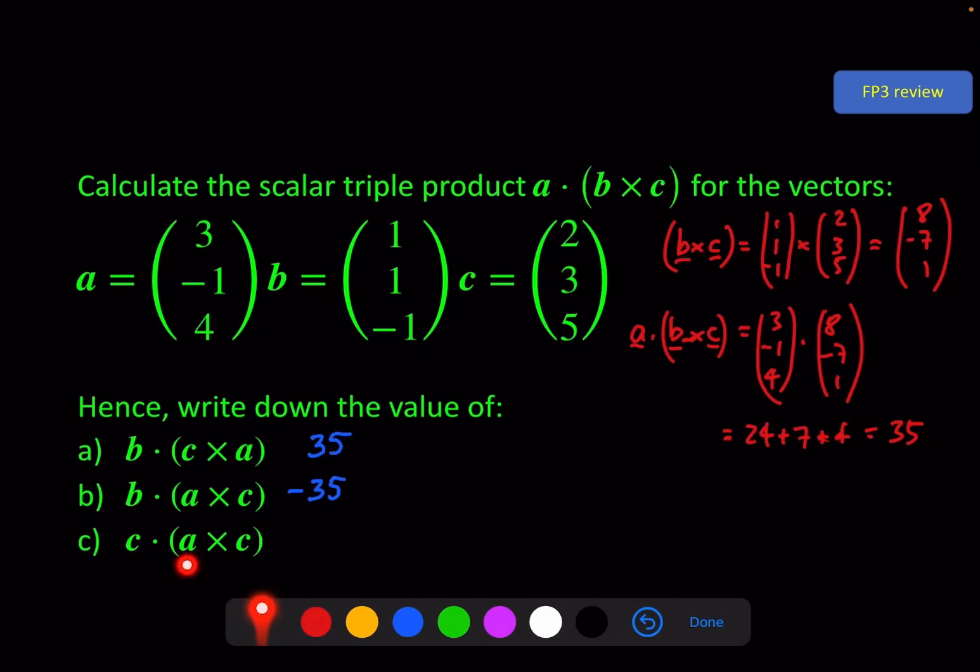The last one, c · (a × c). Well there's two vectors here that are the same, therefore they must be parallel to one another. So this one is 0. If you see the words 'write down' in a question, that's a big clue that you shouldn't need to do too much working out.